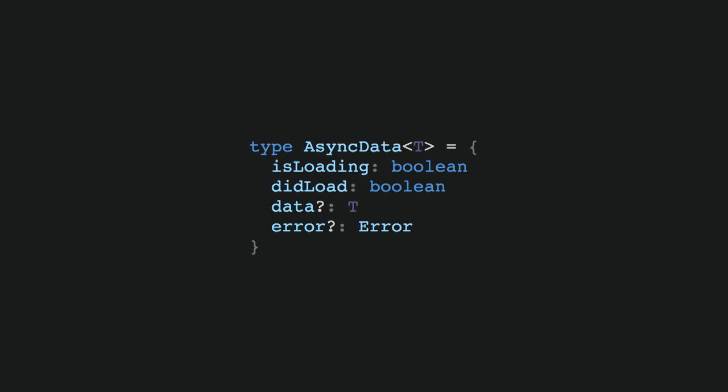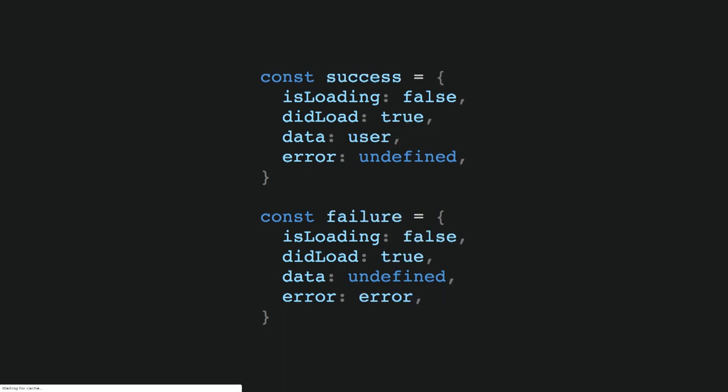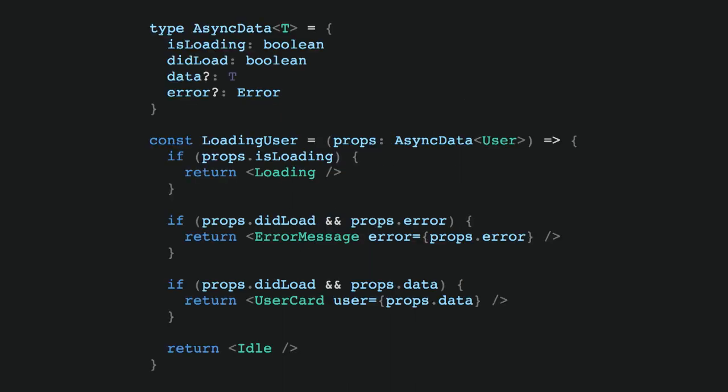We have here our type — it's modeling asynchronous data. We are saying that it can be loading, or it's finished loading. There can be some data in it, or an error. This is how we instantiate it across the different stages. After it resolves, we see a success or a failure. And if we want to use it to present this information to our users in a React component, it will look something like this — in each of the cases, we do some checks and show the relevant information to the user.